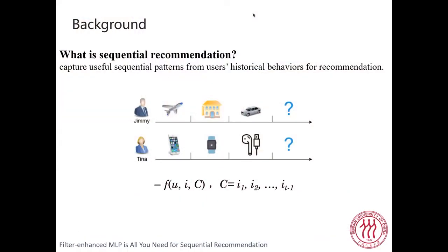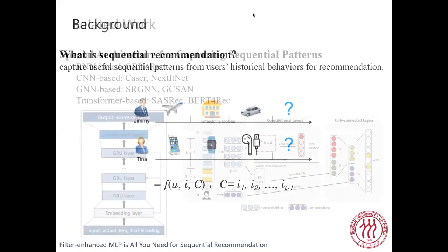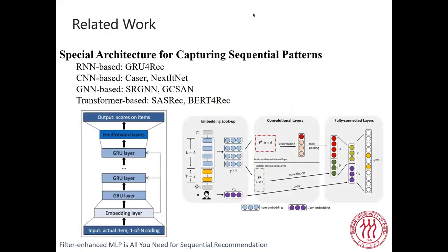I will firstly introduce the background of this paper. What is sequential recommendation? In real-world platforms, the user's behaviors can be a sequence of items. This task aims to capture useful sequential patterns from the user's historical behaviors for recommendation at the next time step. Early works proposed recurrent neural network-based models and convolutional neural network-based models. Recently, graph neural network and transformer-based models have also been proposed.